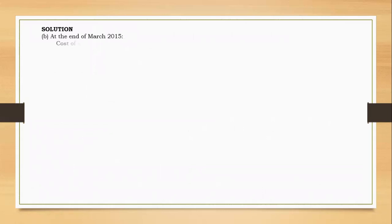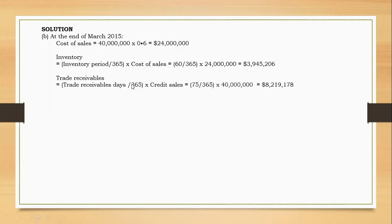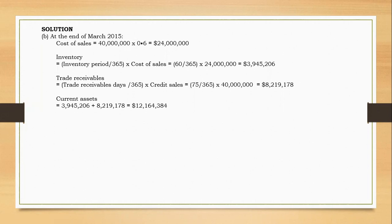To obtain inventory: inventory equals inventory holding period over 365 days, multiplied by cost of sales. Inventory holding period is 60 days over 365, times cost of sales of 24 million — arriving at 3,945,206. Then for trade receivables: trade receivable collection period over 365, multiplied by credit sales. Receivables collection period is 75 days over 365, times 40 million — giving 8,219,178. Total current assets are obtained by summing inventory and trade receivables, giving approximately 12,164,384. Those are the current assets.